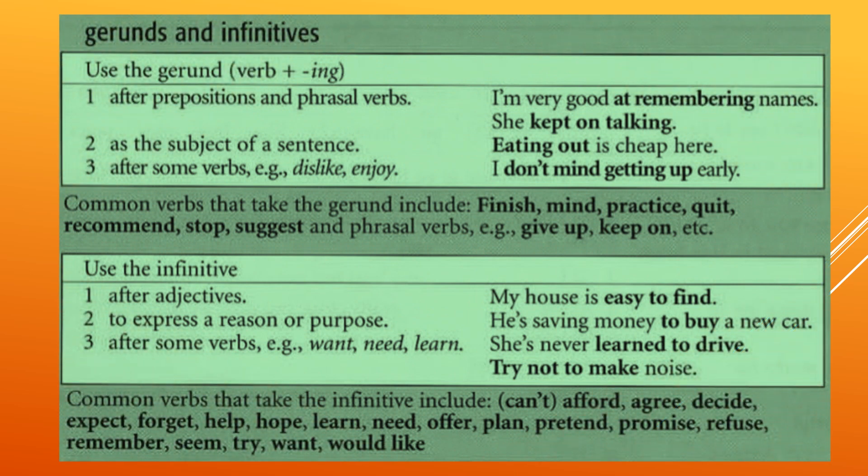Hi everyone. We already talked about gerunds and infinitives in previous videos. We talked about gerunds and infinitives — 'un-talking' because of the preposition, so we use -ing for 'talk'.